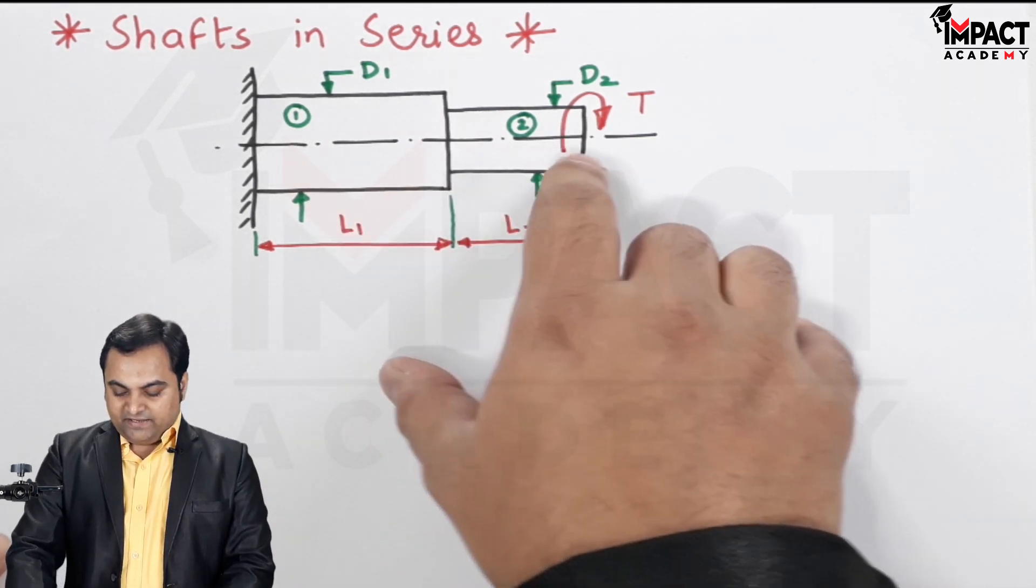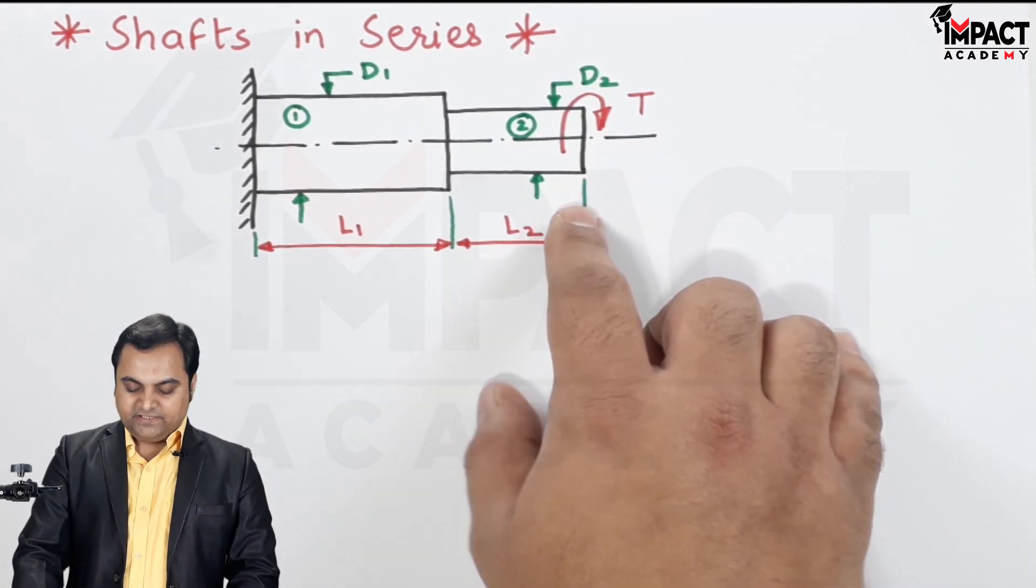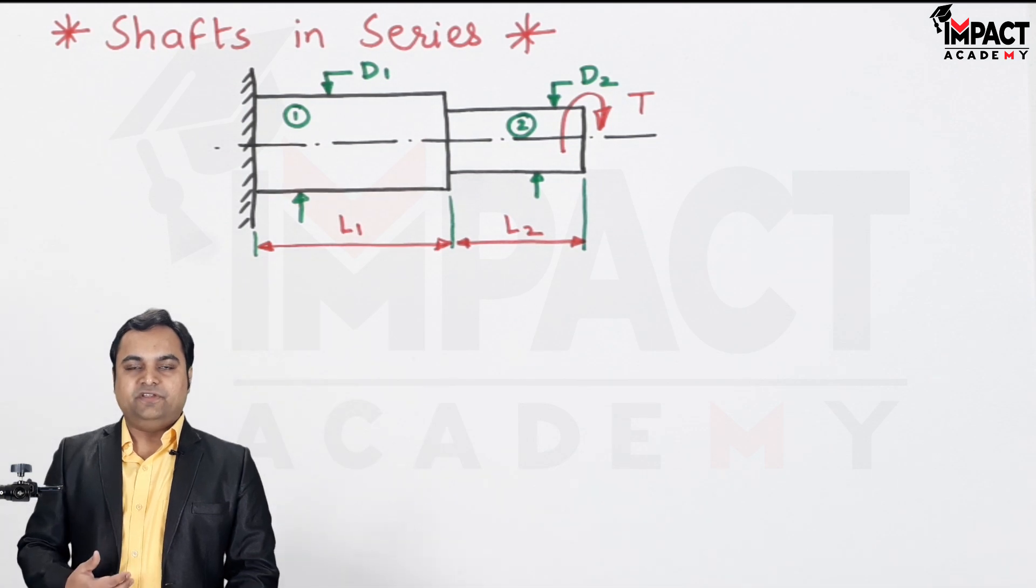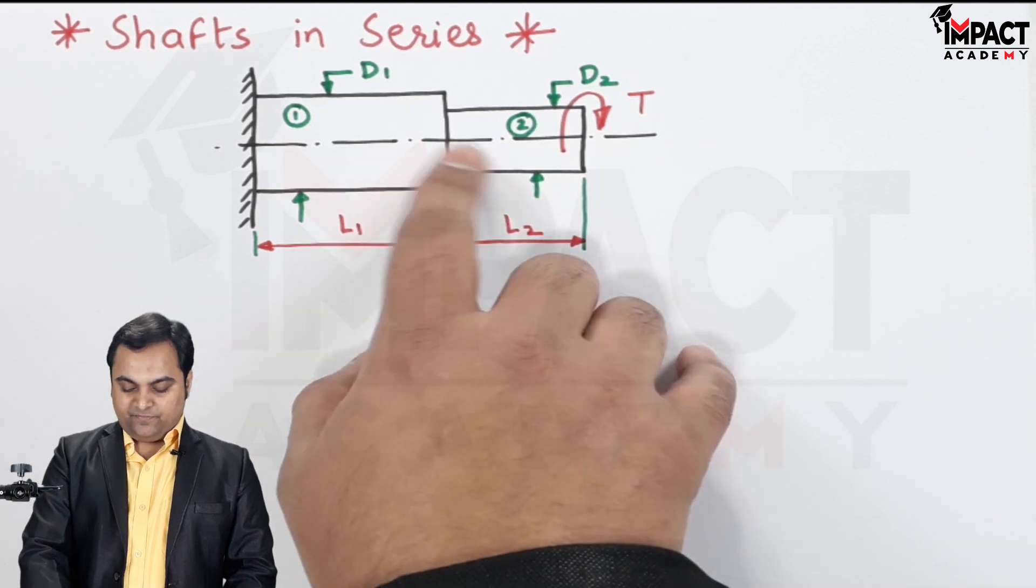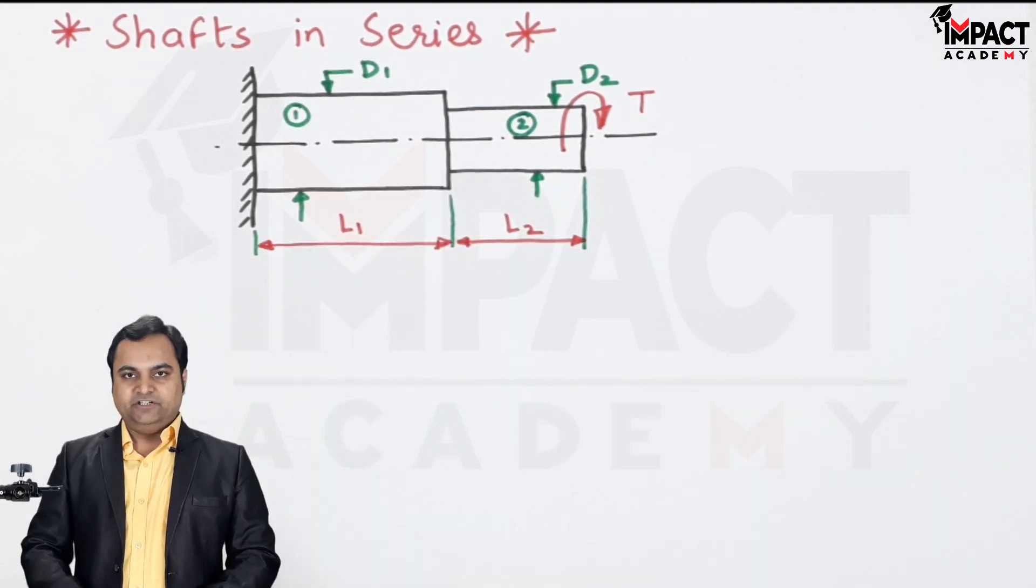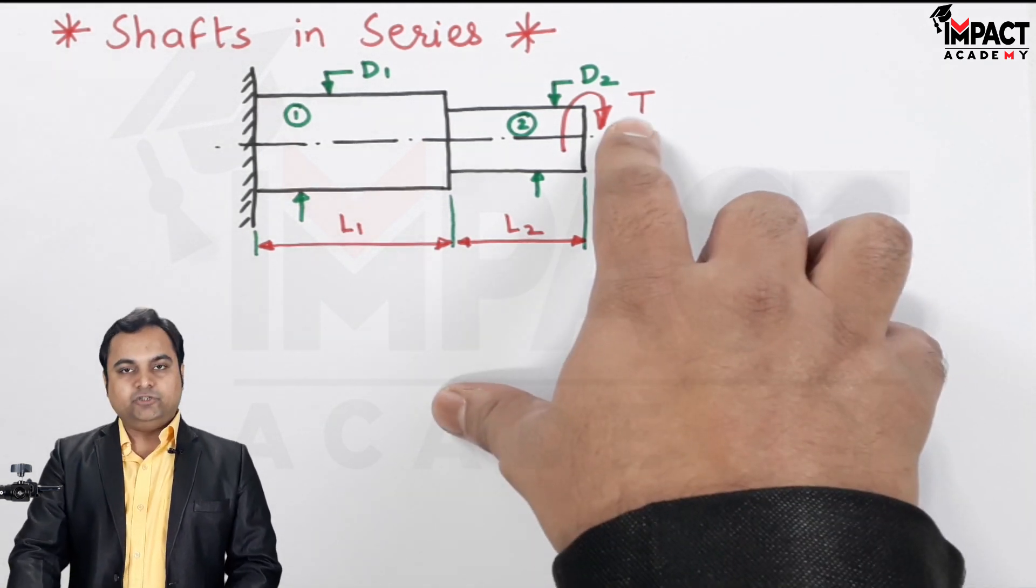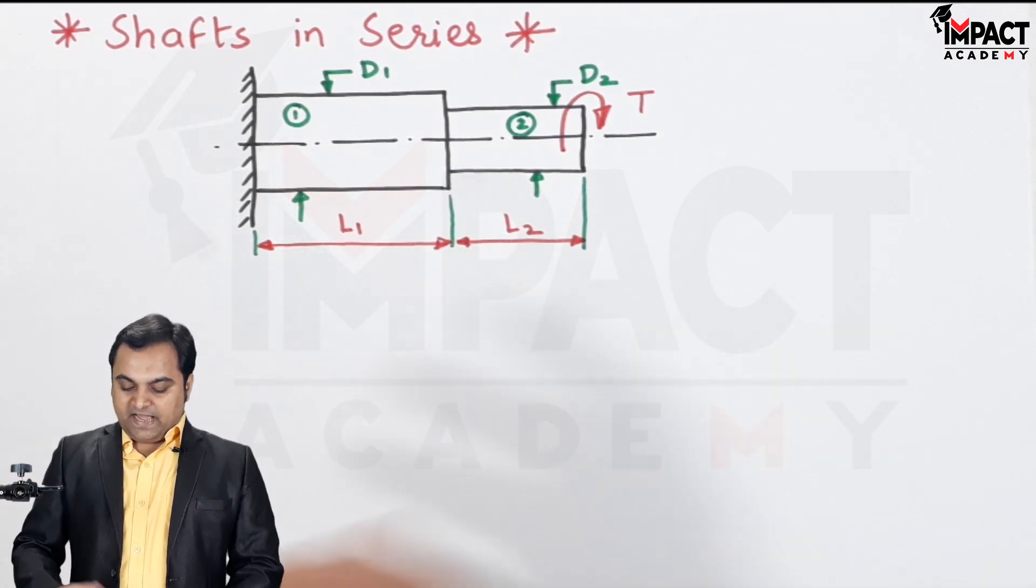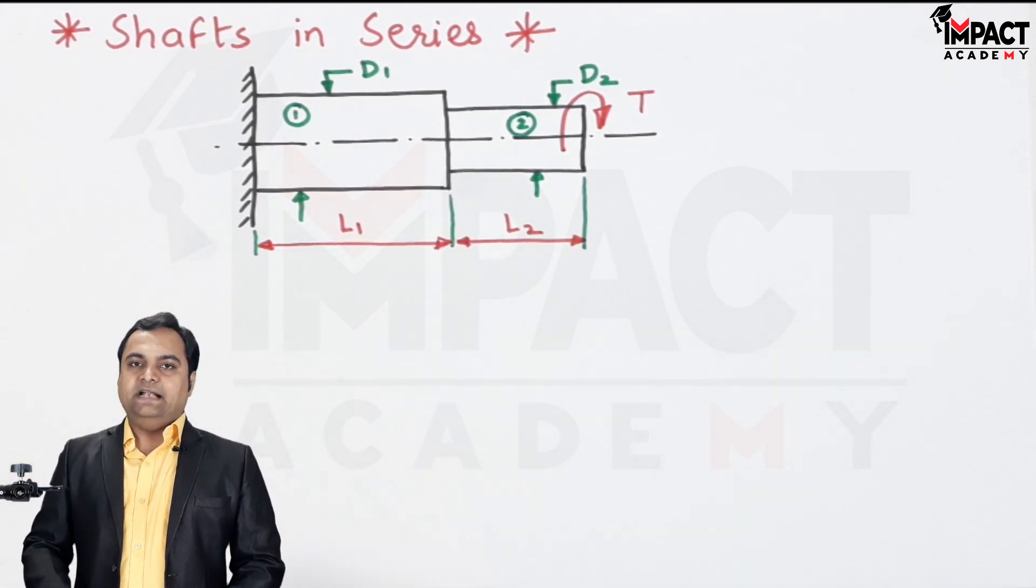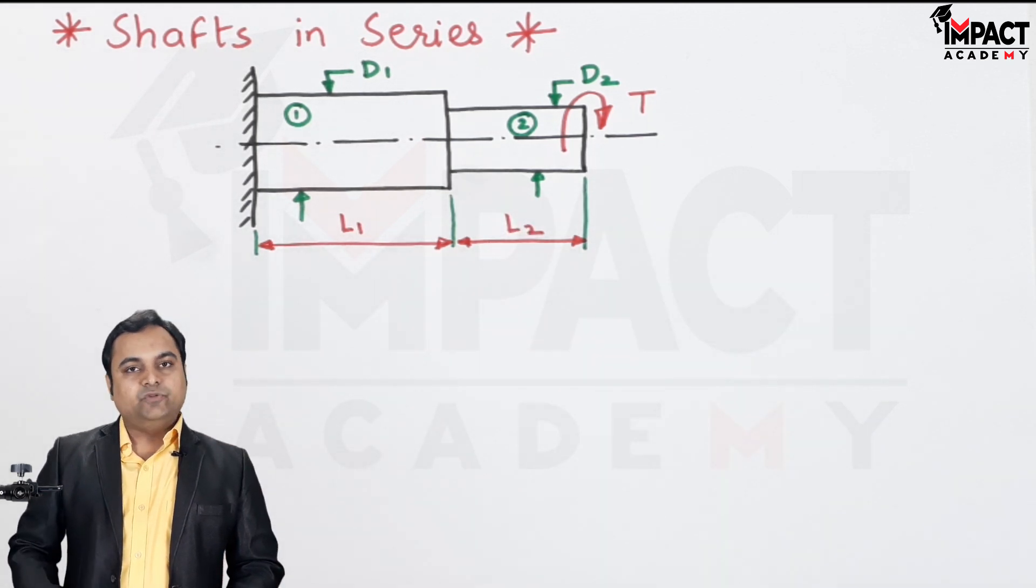When we have shafts in series and a torque is applied at one of the ends, the conditions for shafts in series are that the applied torque would be same for both the shafts. Like for example here, I have taken two shafts. Even if it would have been three shafts, the applied torque remains constant for those shafts. And then the angle of twist would be added. That is, angle of twist would be the addition of angle of twist for shaft one and for shaft two. I'll write down the conditions over here.